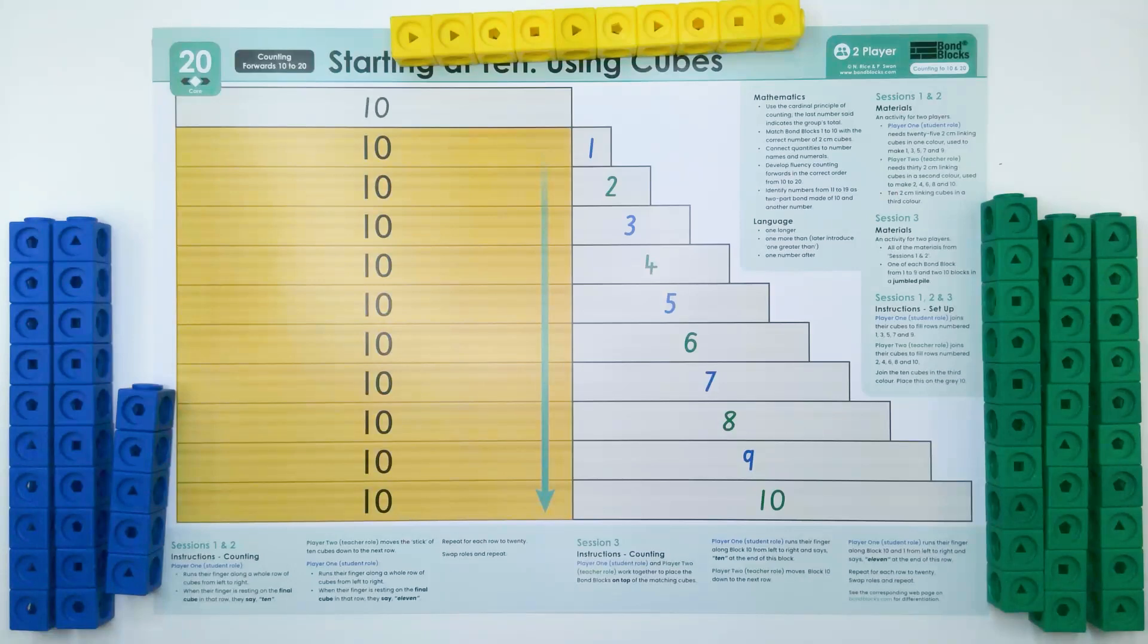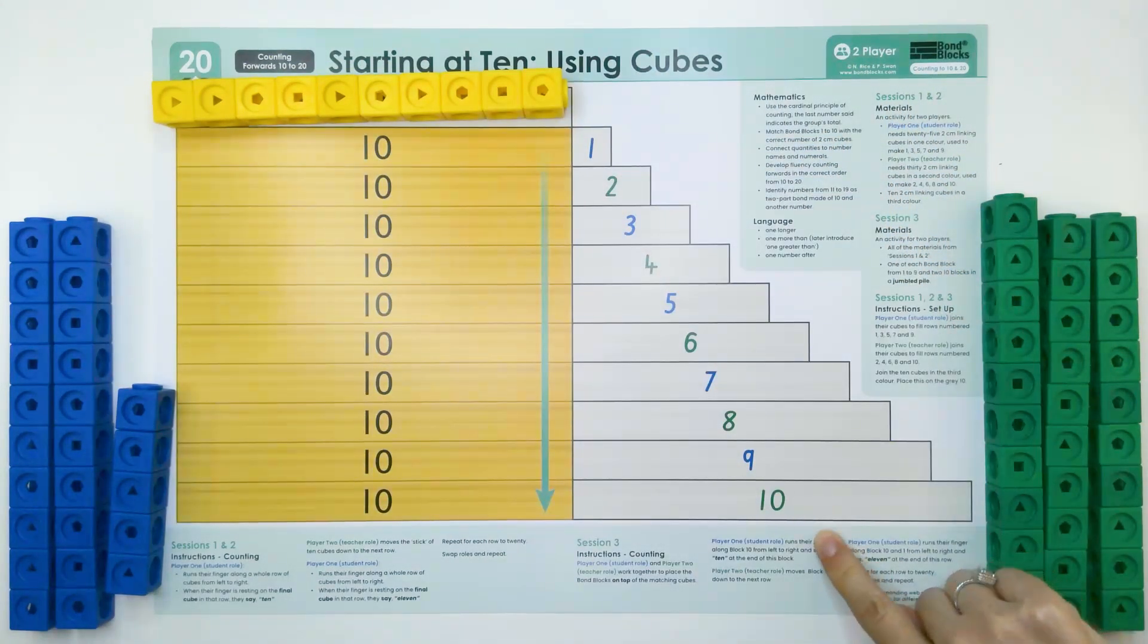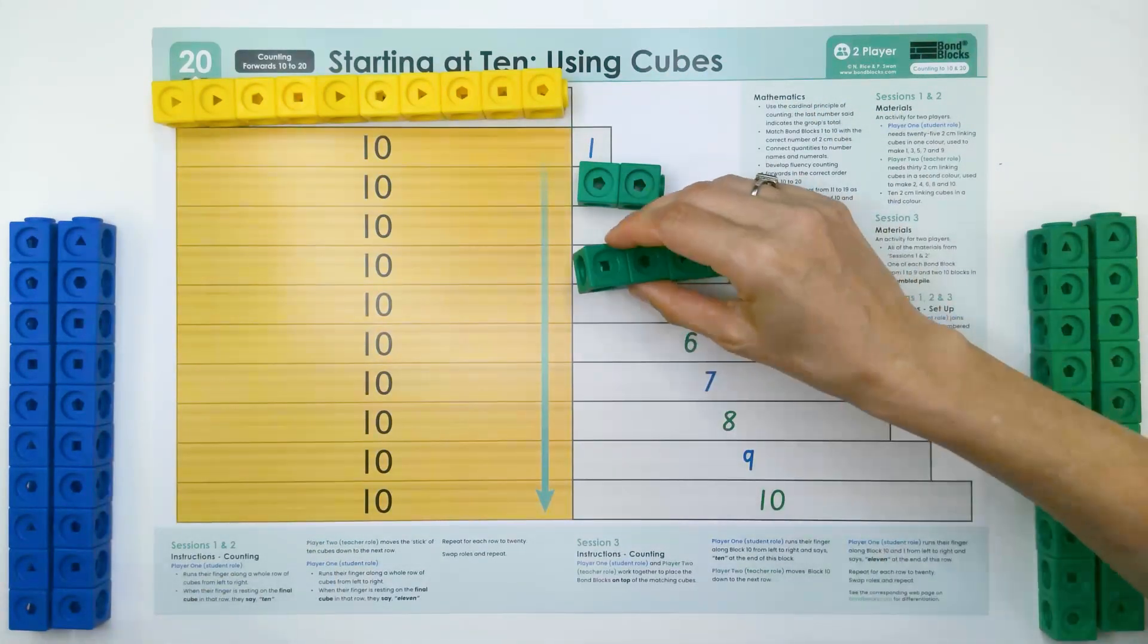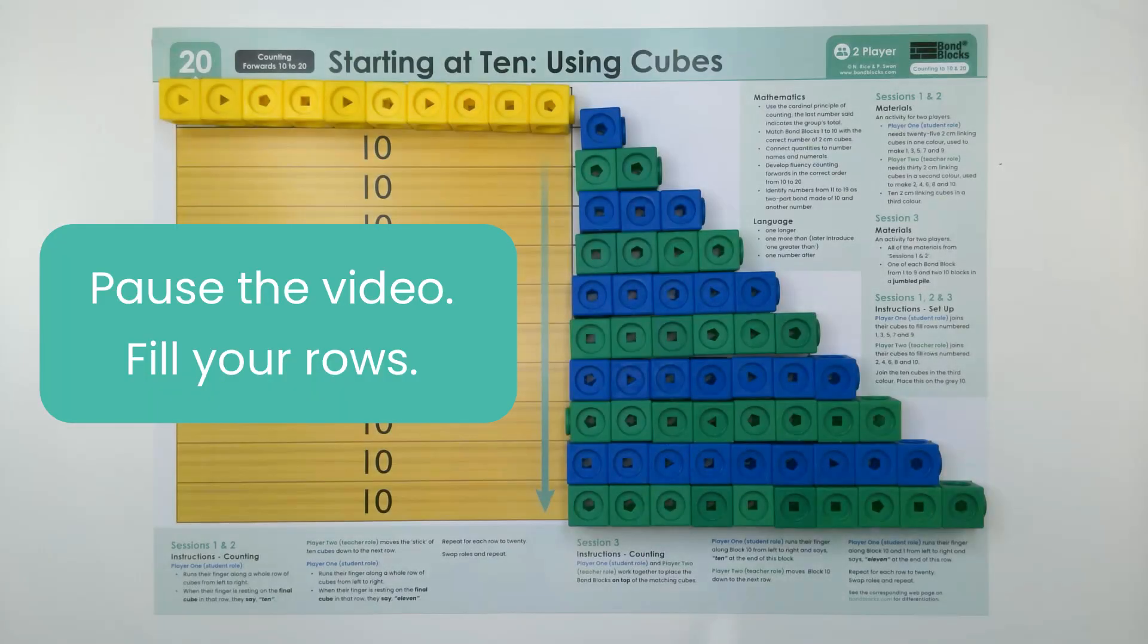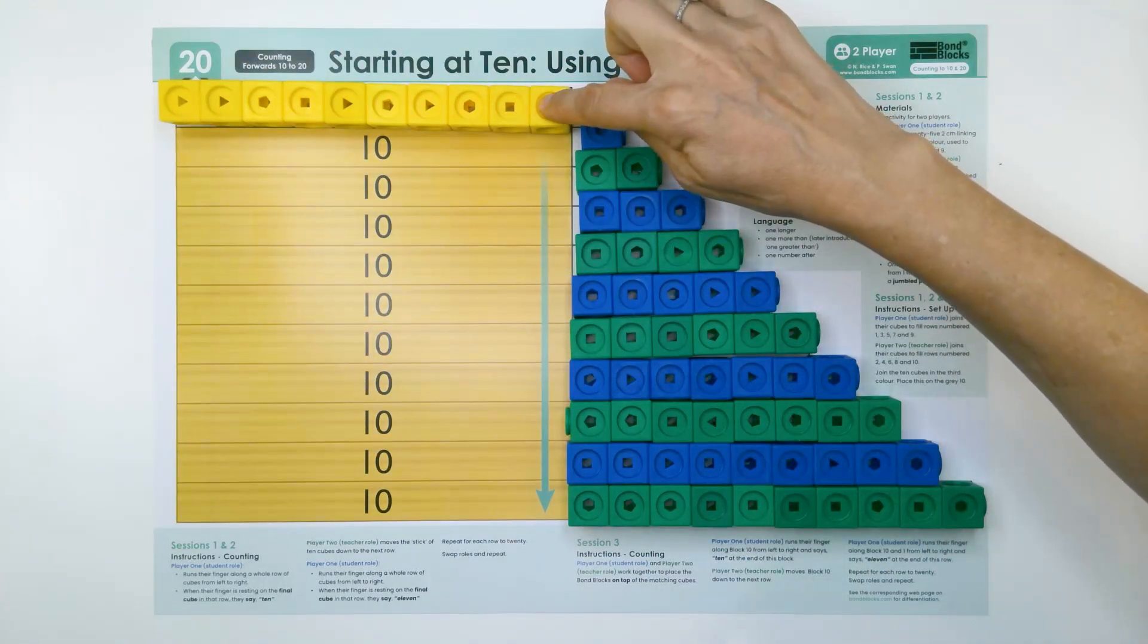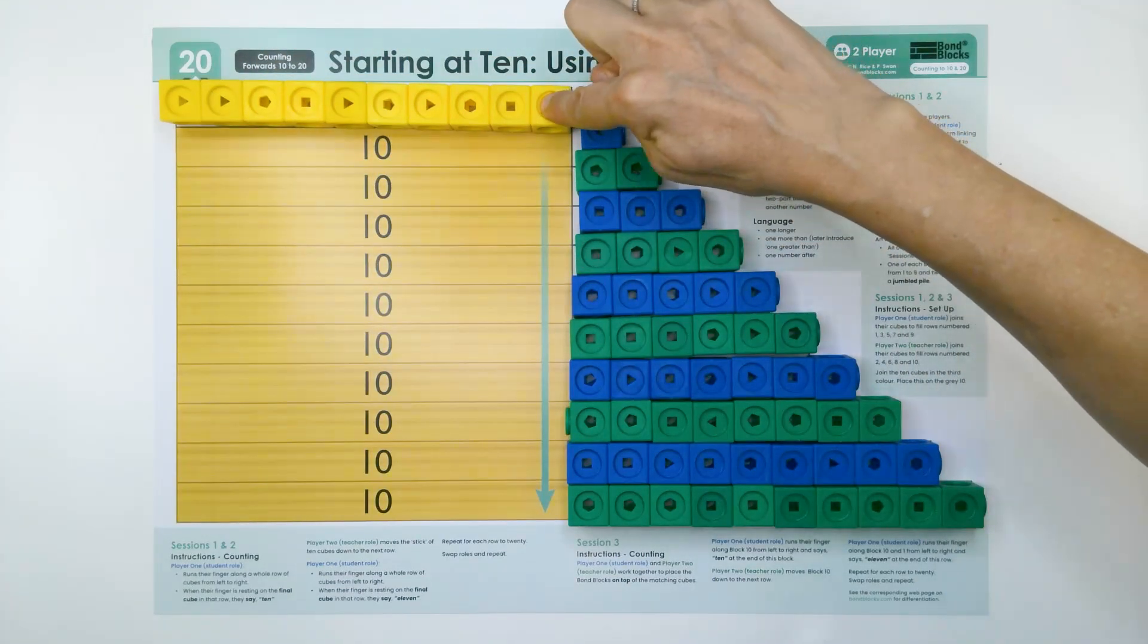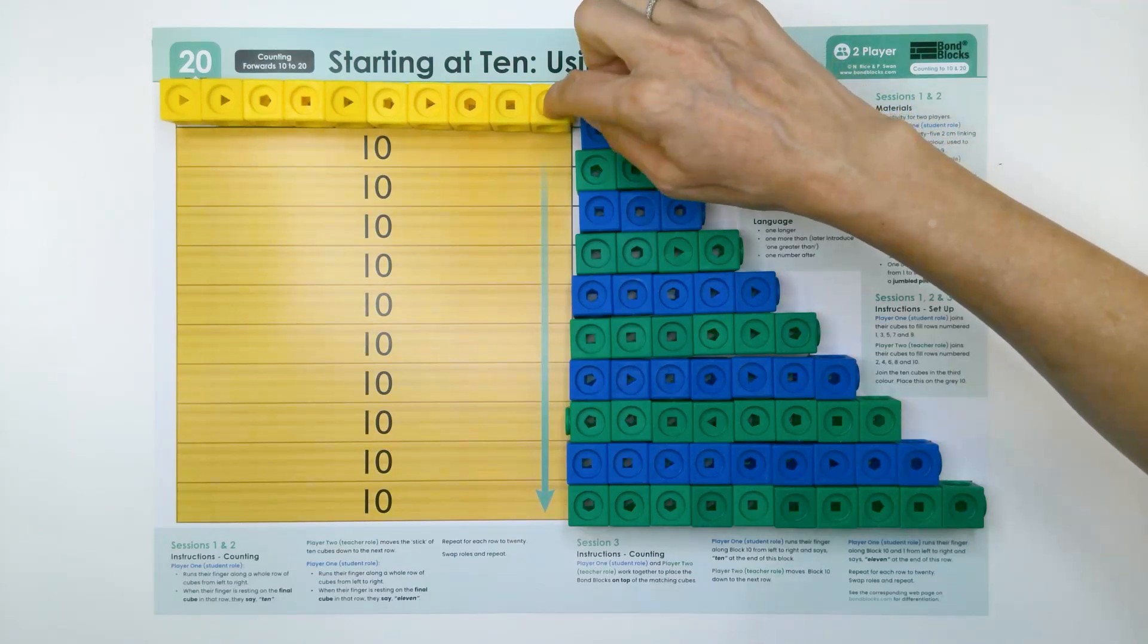Now we're going to work together to fill our rows from 1 to 10. We're going to count the number of cubes in each row, saying the number of cubes when our finger is resting on the final cube in a row. I'll do the first few to show you.